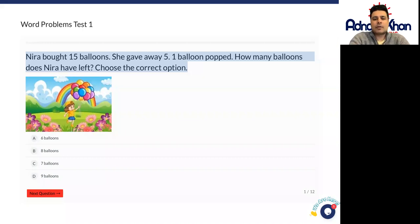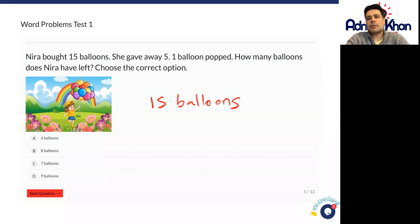So let's work this out together. We've got a few things going on here that we can see. First of all, Nira had 15 balloons. So let's just write this down. The best thing is to actually work this out on a piece of paper.